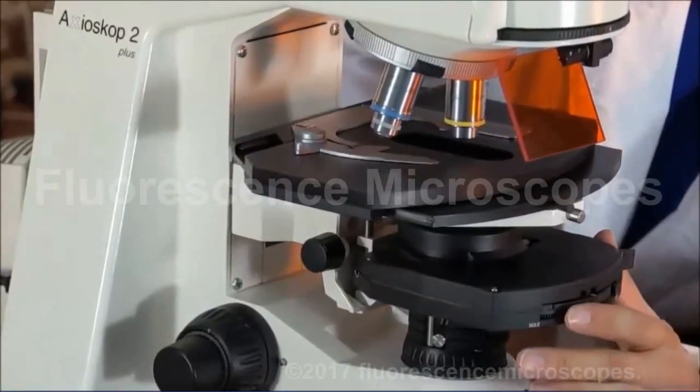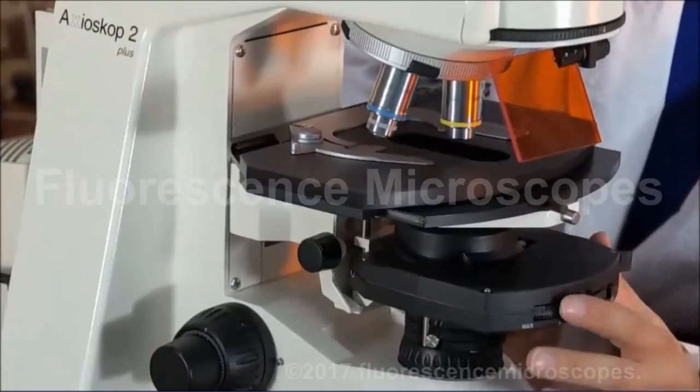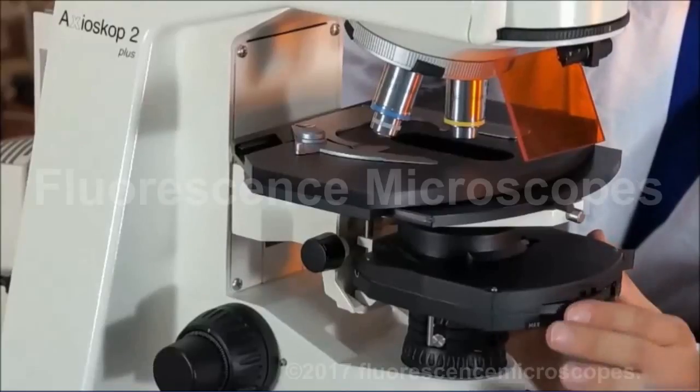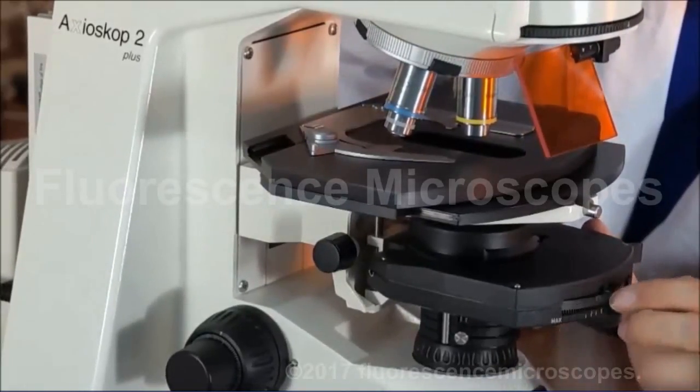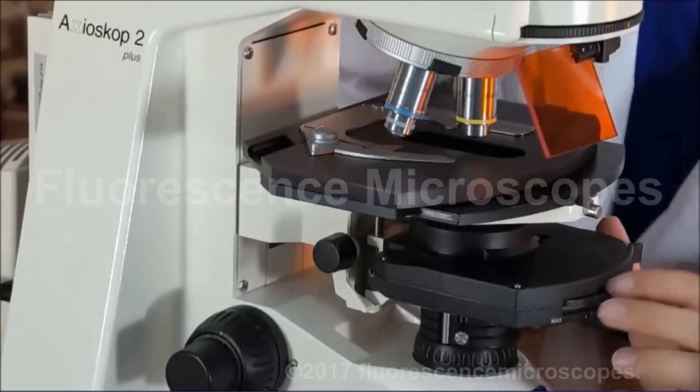And we've got a phase number 1. And we've got a dark field setting. Here's a DIC 3, Roman numeral 3. Here's a phase 3. DIC Roman numeral 2. And a phase 2. And back to your bright field.